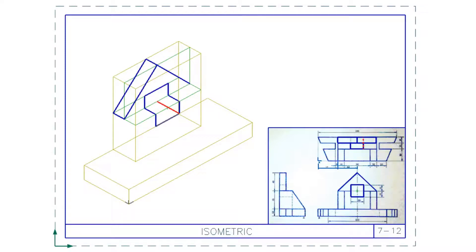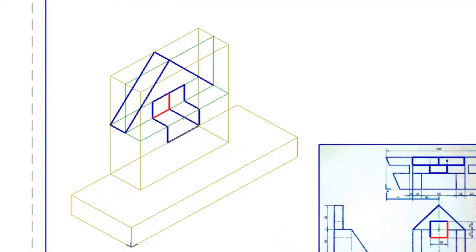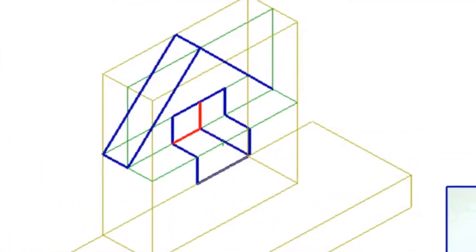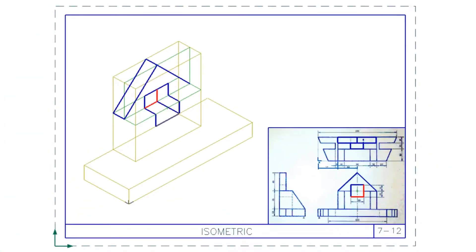Then you're going to be drawing the inside corners. You're only going to see the one, and then you're just going to take the back straight up and at 30 degrees to the left. After you've done that you can actually go and draw the top surfaces, which you already have on the construction.